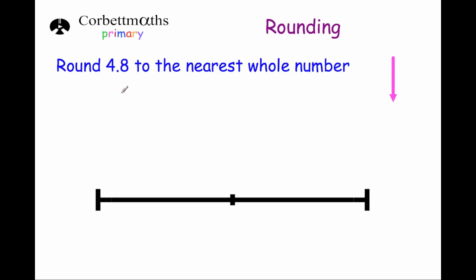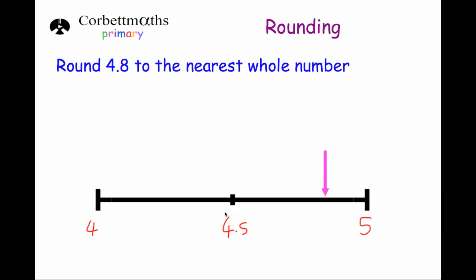Our next question asks us to round 4.8 to the nearest whole number. The whole number below 4.8 is 4 and above is 5, and midway between 4 and 5 is 4.5. If we place 4.8 on the number line it would be up here because 4.8 is bigger than 4.5. So 4.8 is closer to 5 than to 4, meaning our answer is 5.